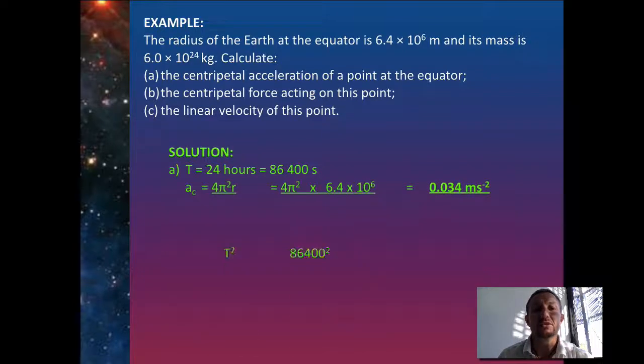So I can now substitute that into my formula, 4 pi squared R over T squared, and as a result, I can get 0.034 metres per second per second for my centripetal acceleration.